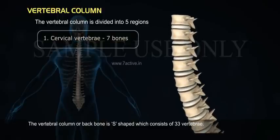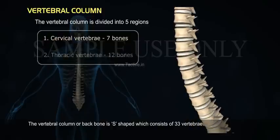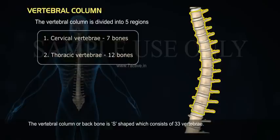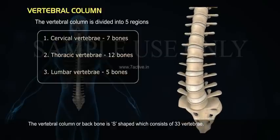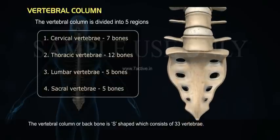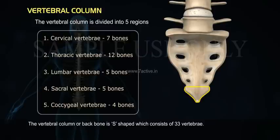One, cervical vertebrae — seven bones. Two, thoracic vertebrae — twelve bones. Three, lumbar vertebrae — five bones. Four, sacral vertebrae — five bones. Five, coccygeal vertebrae — four bones.